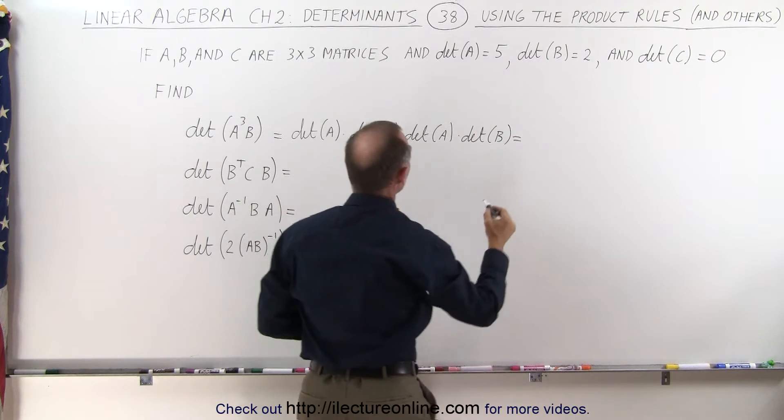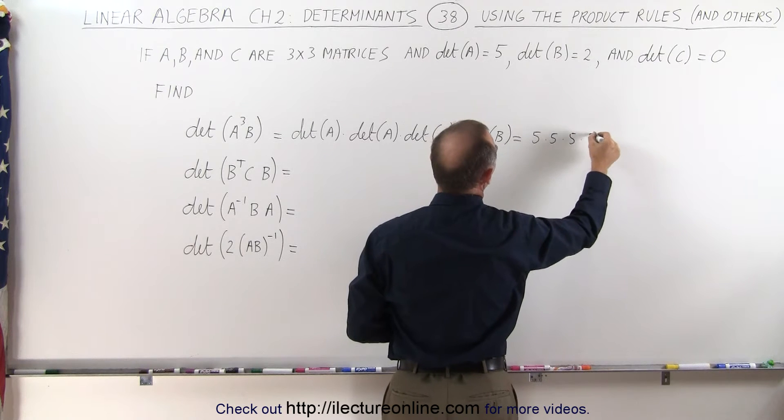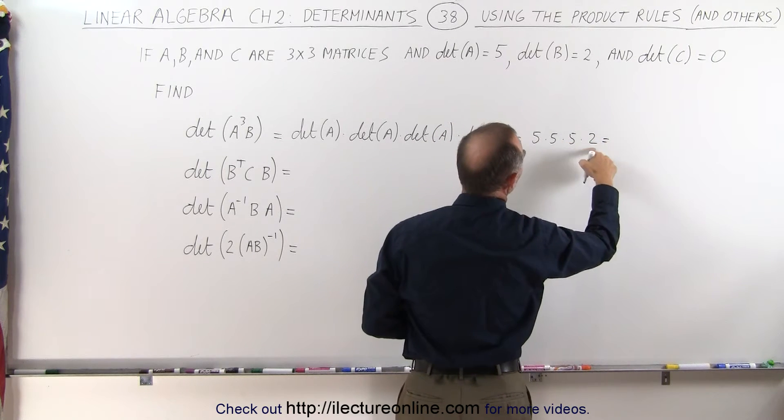And then since we know what they are, this is therefore 5 times 5 times 5 times 2, which is 125 times 2, or 250.